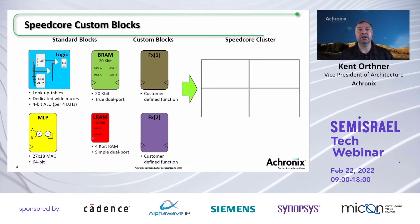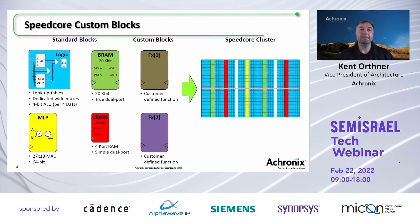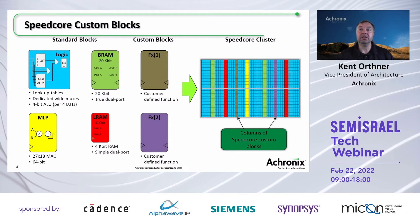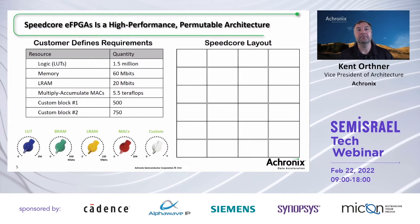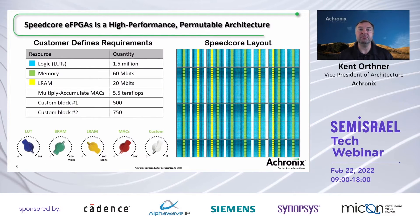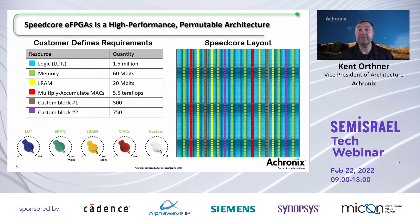When we build an FPGA for you, we take standard blocks like logic, block memory, arithmetic capabilities such as our MLP, and LRAM capability, and combine them with custom blocks that you provide, which give you control over exactly what's going into the FPGA. You control the number of lookup tables, the amount of memory, the number of arithmetic blocks, and the number of custom blocks. We build this slightly different for every customer so that the FPGA capabilities perfectly match your ASIC and end application.